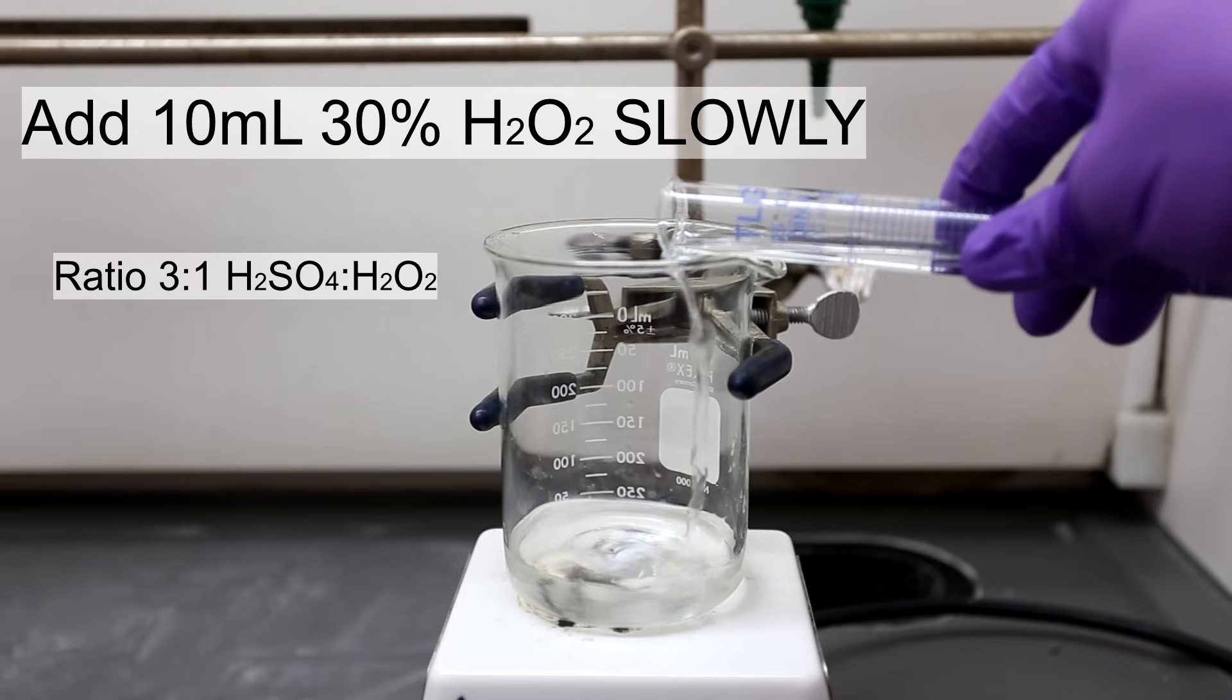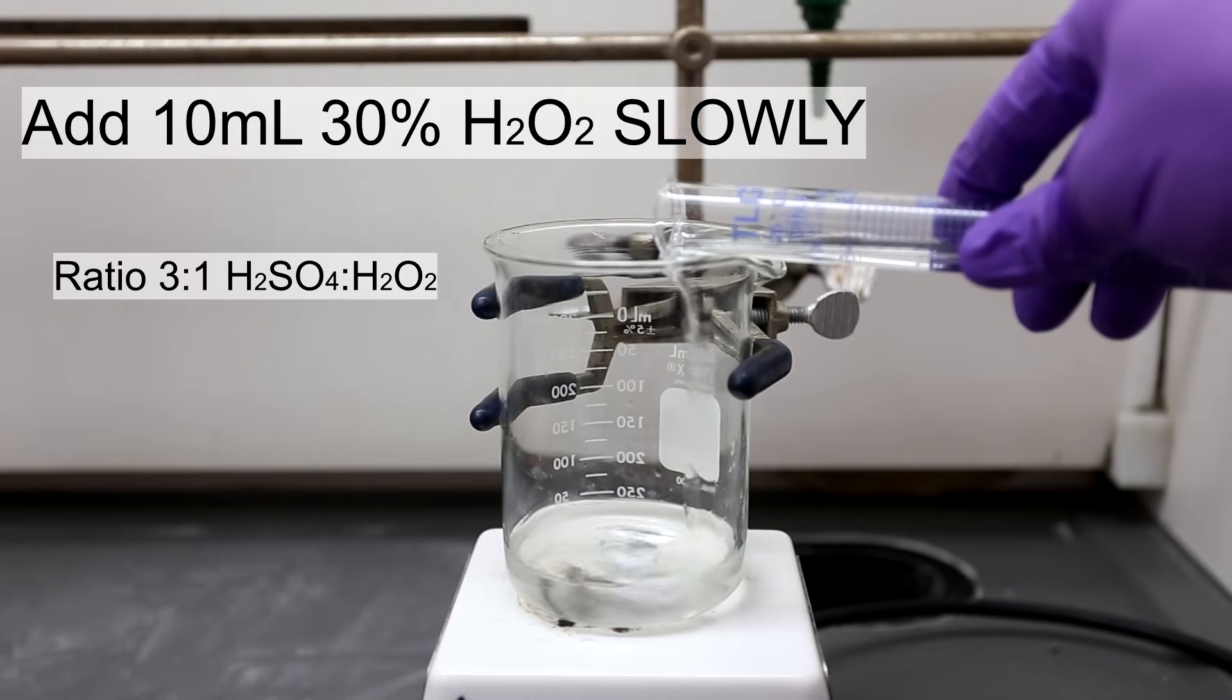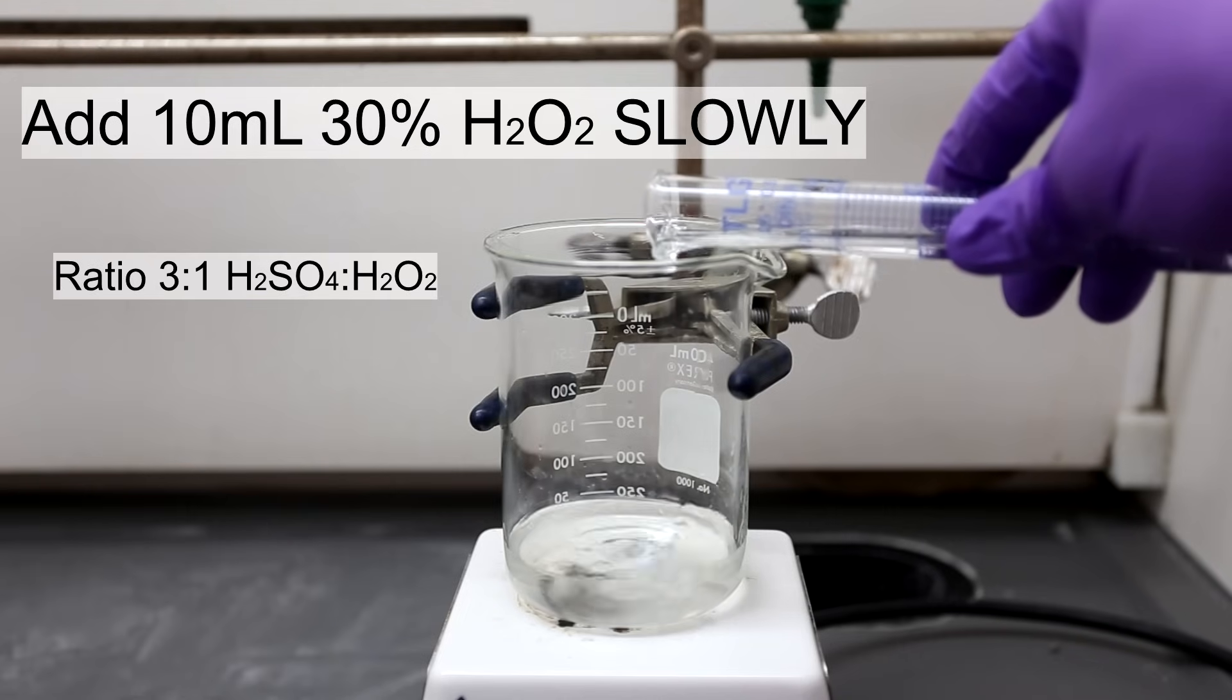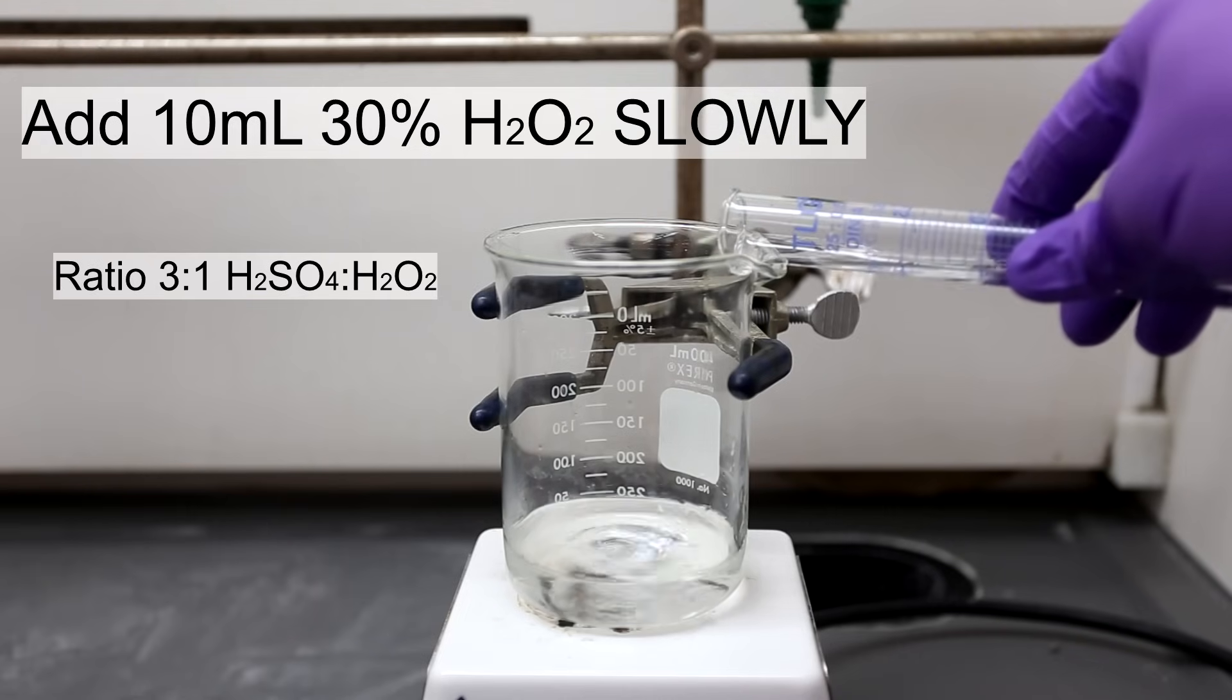Different amounts of sulfuric acid and hydrogen peroxide can be used, but try to maintain a ratio of about 3 to 1 sulfuric acid to hydrogen peroxide.